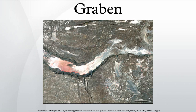A graben is the result of a block of land being down-thrown, producing a valley with a distinct scarp on each side. Graben often occur side by side with horsts. Horst and graben structures are indicative of tensional forces and crustal stretching. Graben are produced from parallel normal faults, where the hanging wall is down-thrown and the foot wall is up-thrown. The faults typically dip toward the center of the graben from both sides.